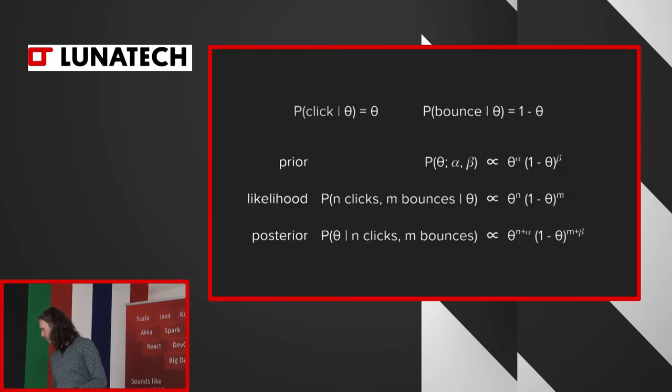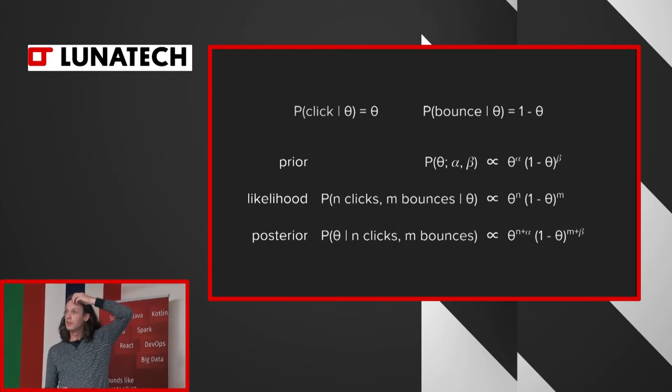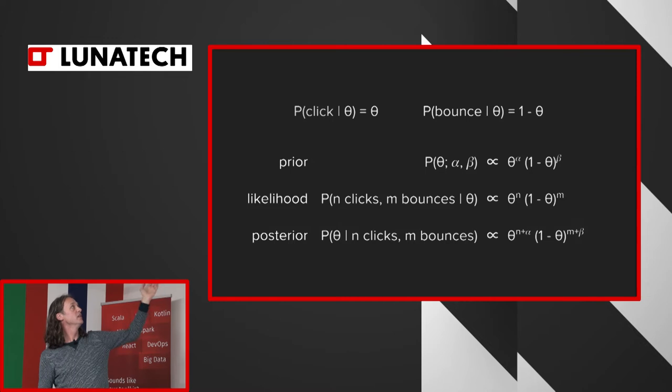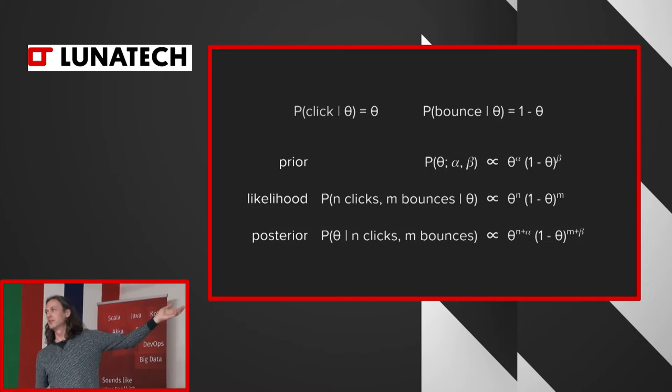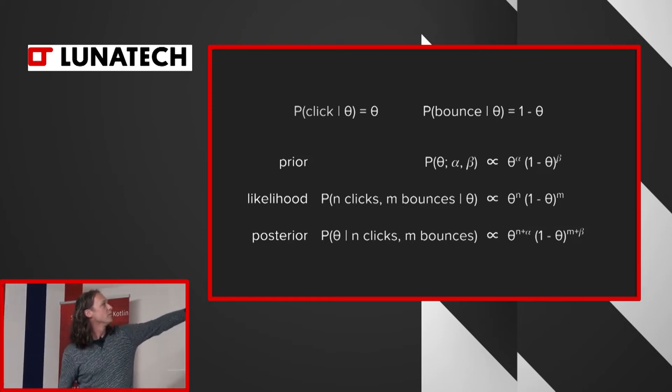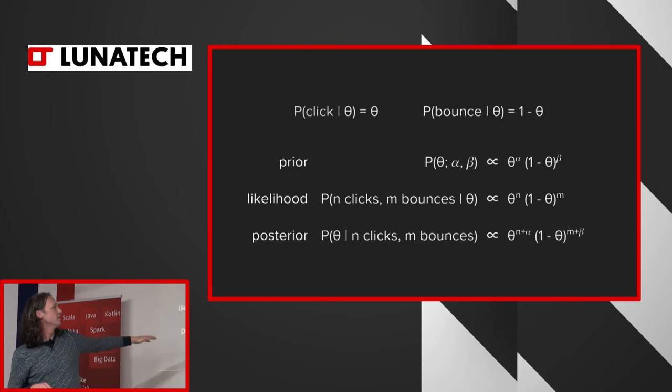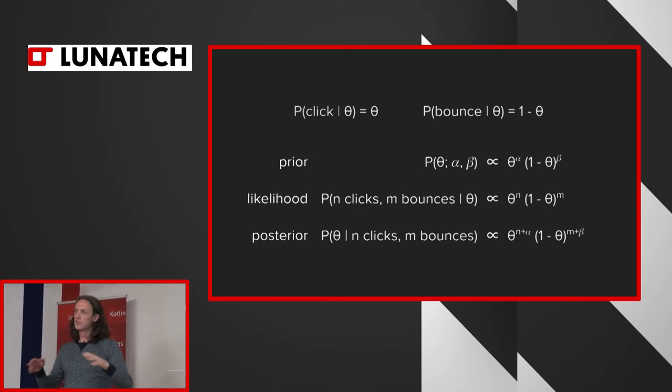So here's the math. It's actually very simple. Here theta is the conversion rate. So the probability that somebody clicks theta. Say that somebody doesn't click, it's one minus theta. And here we can do everything exactly. Say you have a prior, and in this case I assume it's constant. Every likelihood. And then we have a posterior distribution. That's the probability of a particular conversion rate given all the data.